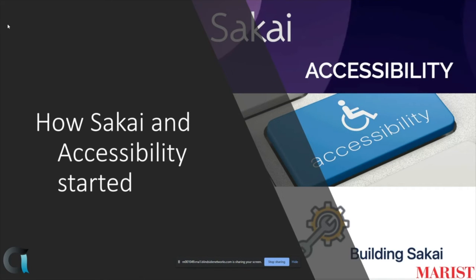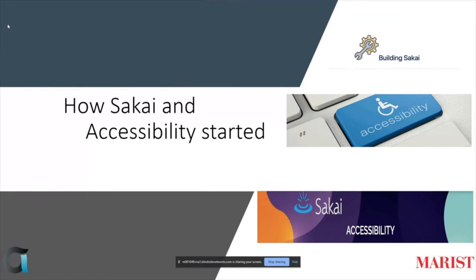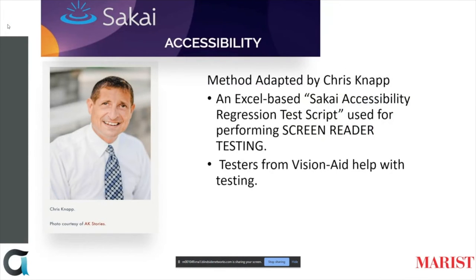Sakai has been performing accessibility testing for many years. Initially, there was a limited amount of testing performed by other members of the Sakai community, and institutions would even involve students with disabilities to do accessibility testing on their local instances of Sakai. Later, accessibility was extensively worked on after Chris Knapp was embedded as part of Sakai QA. Chris followed a method of adapting a testing script to create a Sakai accessibility regression test script for keyboard and screen reader testing. Through a long-time partnership with VisionAid, an Indian-based organization, several more combinations of screen readers and web browsers were added to the testing.